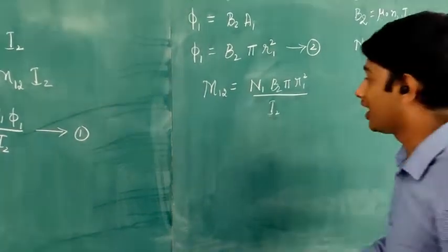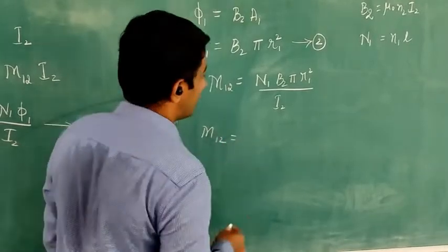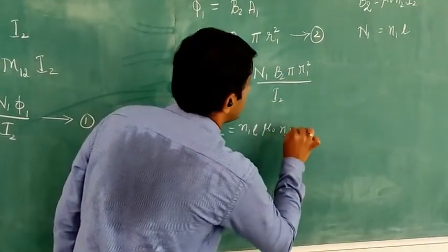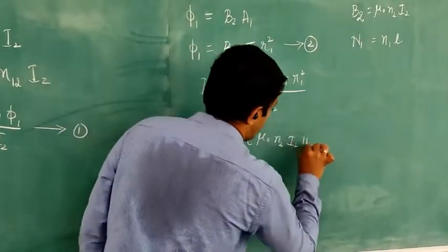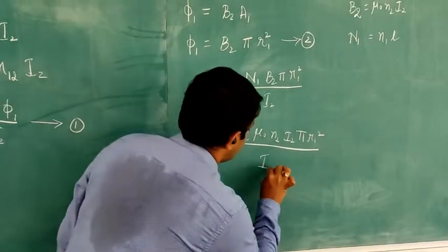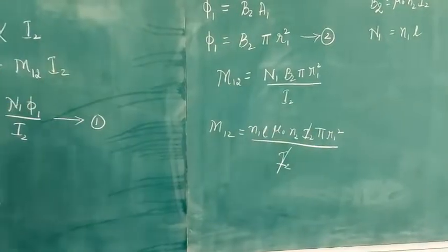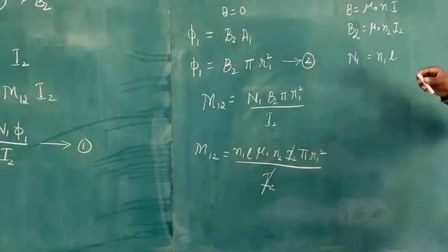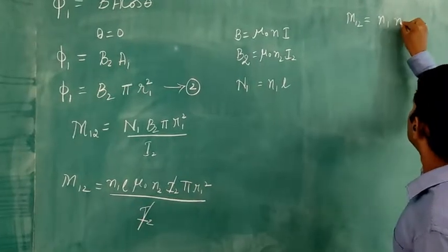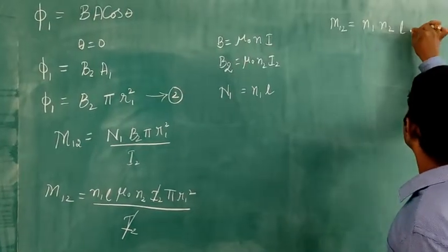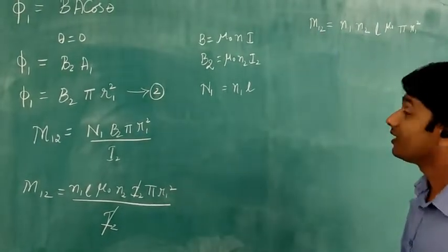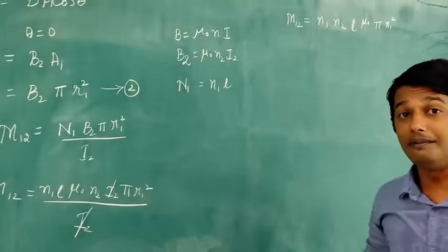Substituting B2 = μ₀n2I2 and N1 = n1L into the expression for M12: M12 equals n1L × μ₀n2I2 × πR1² divided by I2. The I2 terms cancel, giving M12 equals μ₀n1n2L × πR1². This is the expression for the mutual inductance of the first solenoid with respect to the second.